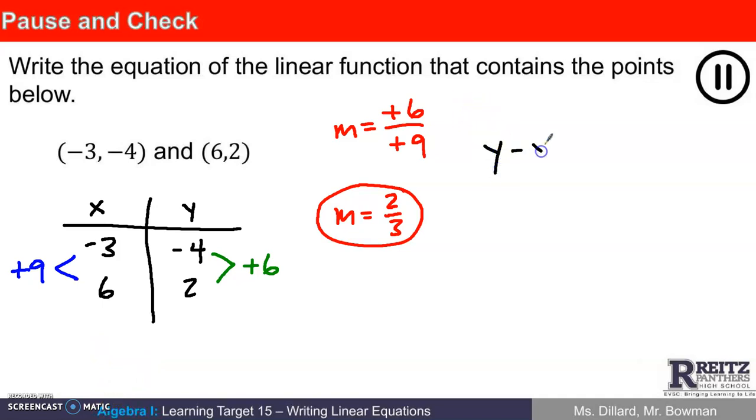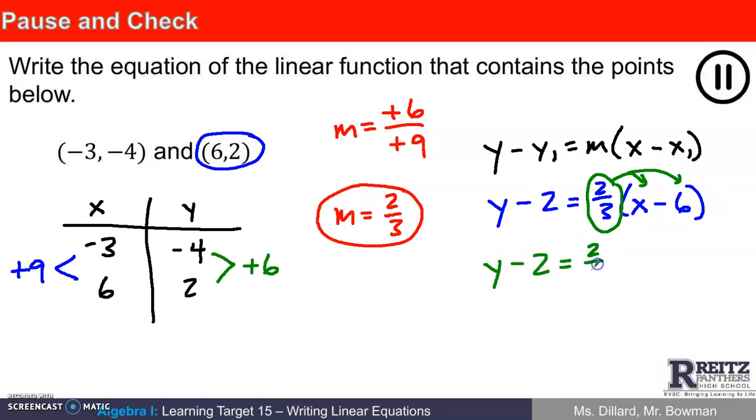So to write my line equation, I'll use the point slope form. Which point should I use? Maybe I'll use this one. How about y minus 2 equals 2 thirds times the quantity x minus 6. Now I do have to be careful distributing here this 2 thirds. I'm going to get y minus 2 equals 2 thirds x. To multiply a fraction by an integer, it's top times number divided by bottom. 2 times negative 6 is negative 12, negative 12 divided by 3 is negative 4. And the last thing I need to do is add 2 to both sides. Final answer is y equals 2 thirds x minus 2.